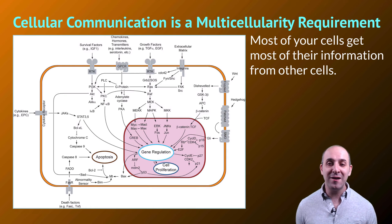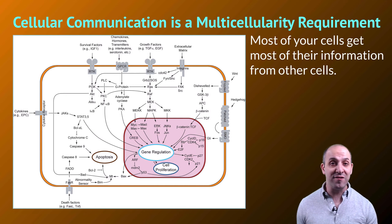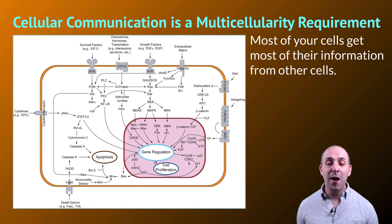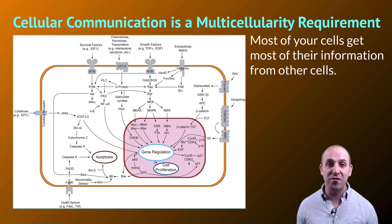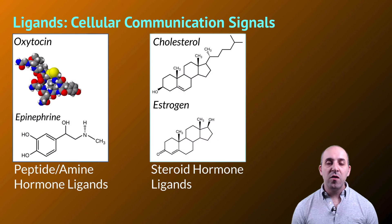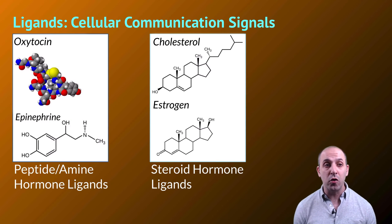Almost every cell in your body is getting almost all of its information about what it should be doing from other cells in your body. Let's focus on all of the receptors we see on the surface of the cell and all of the different molecules that can be received by this cell in order to carry out different communication pathways and different responses. There are quite a few of them, and the kinds of messages they can send and the responses they will engender are widely diverse. So let's dive in and look at the specifics of signal transduction.